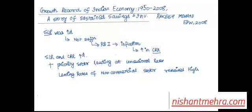High lending rates for the non-commercial sector meant there would be less private investment — this crowded out private sector investment. The argument is: SLR was already high, CRR was also made high, and the priority sector had to be given lending at concessional rates. So whatever was left for the non-priority sector had very high lending rates, meaning private sector investment was very low or crowded out.